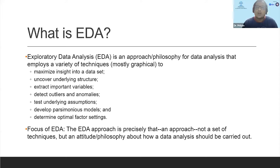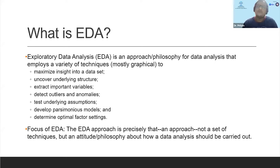EDA also helps us to extract important variables. Suppose we are playing around with a few variables and we see that some are more associated with each other compared to others. Does this association give us any new insight? Could it mean there is a new signal that needs to be further explored? EDA helps with that as well. It also helps us to detect outliers and anomalies. If you have data points totally different from the rest of the dataset, are these outliers? If so, why — is it part of the data generation process, or could it be a measurement error?